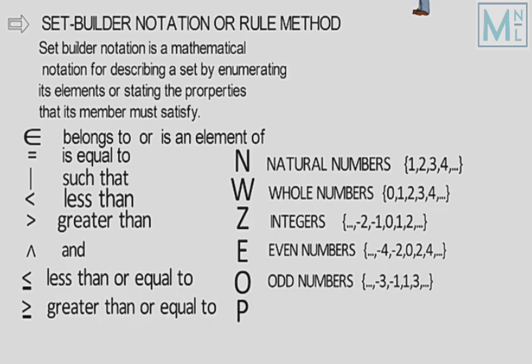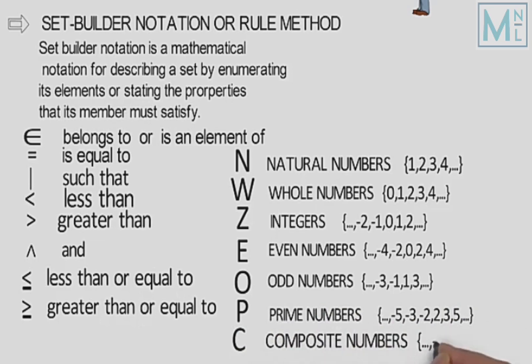Capital P se murad prime numbers, matlab integers mein se woh tamam numbers jinn ke sirf do factors hoon, unko prime numbers kailaate hain. Capital C kailata hai composite numbers, matlab integers mein se woh tamam numbers jinn ke do se zyada factors hoon, composite numbers kailaate hain.